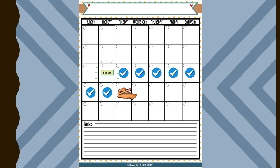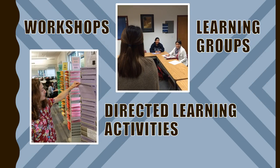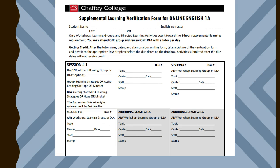If a student decides to do supplemental learning activities live at one of the centers, he or she can choose a DLA, workshop, or learning group. Before visiting a center, the student should print out a supplemental learning verification form available on the CAL. When the student completes an activity, a tutor will sign, date, and stamp the form.